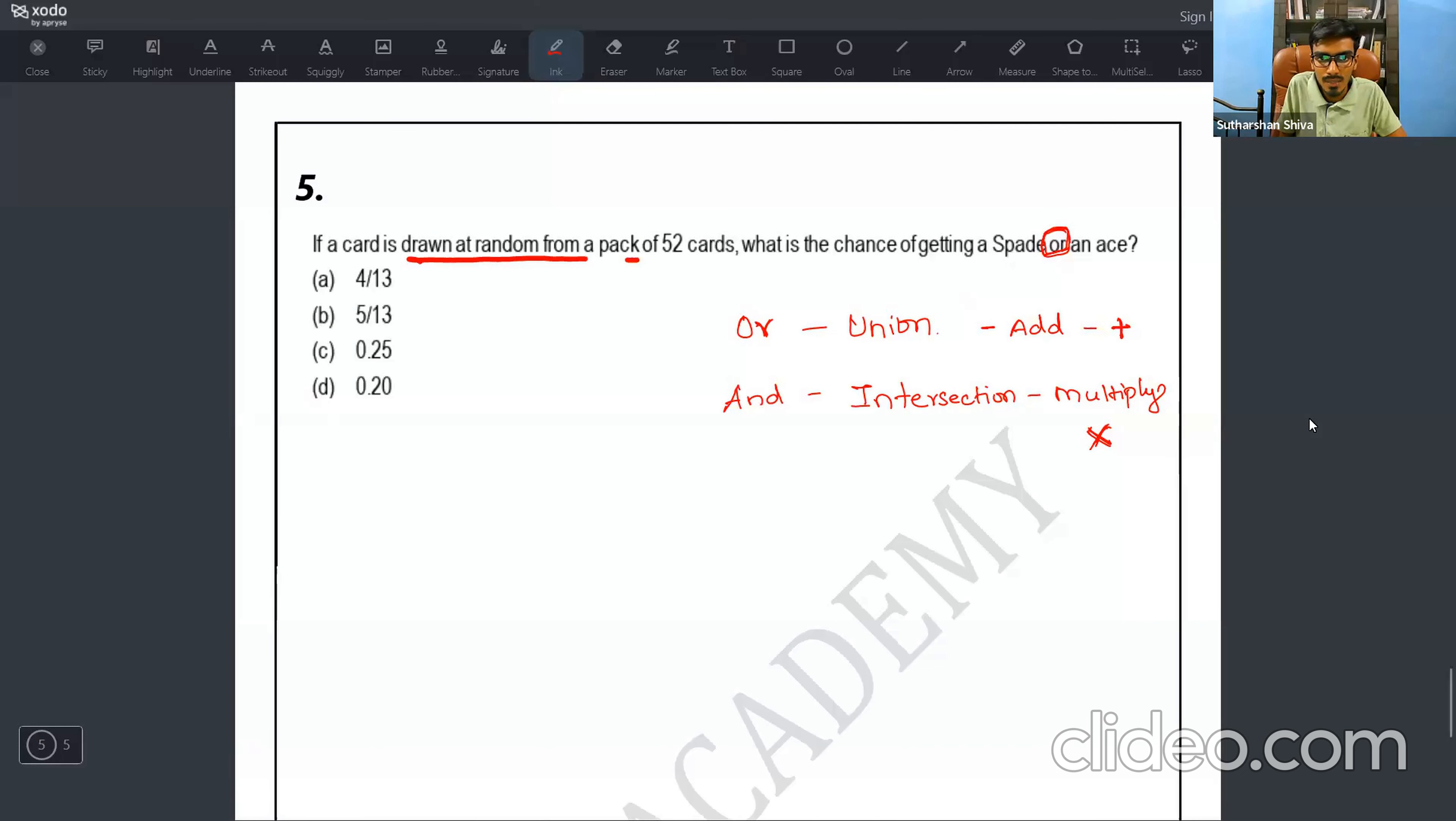Question number five. If the cards are drawn at random from a pack of 52 cards, what is the chance of getting a spade or an ace? If it is an or condition, you need to add it, or in simple, if I want to say it in set language, it is union. So if I have 52 cards, what is the opportunity to get the spade? Spade is getting an opportunity of 13 spade cards in the deck. And how many ace cards will be there? The ace cards will be four. Out of which one card is common because in that spade, we are having an ace. So we need to subtract one. 13 plus 4 minus 1 divided by 52. If you put 17 minus 1 divided by 52, it is 16 by 52. If you cancel, you will get option A, that is 4 divided by 13.